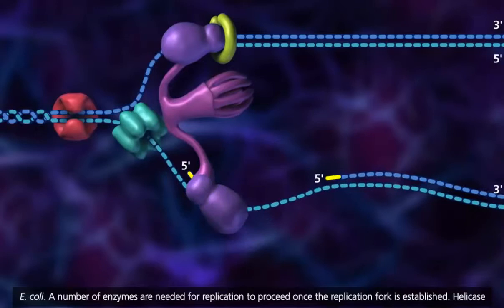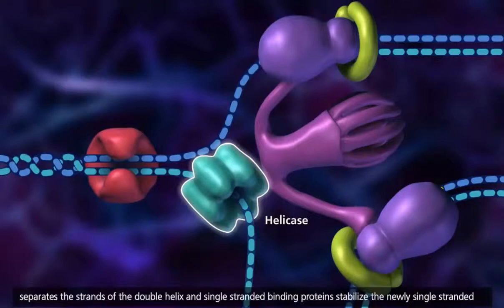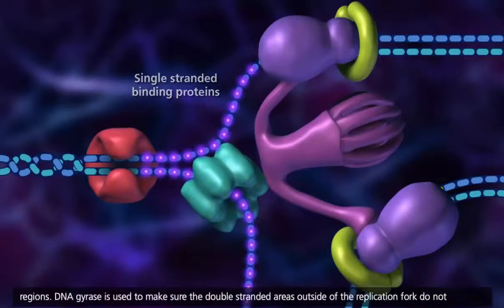Helicase separates the strands of the double helix, and single-stranded binding proteins stabilize the newly single-stranded regions. DNA gyrase is used to make sure the double-stranded areas outside of the replication fork do not supercoil.